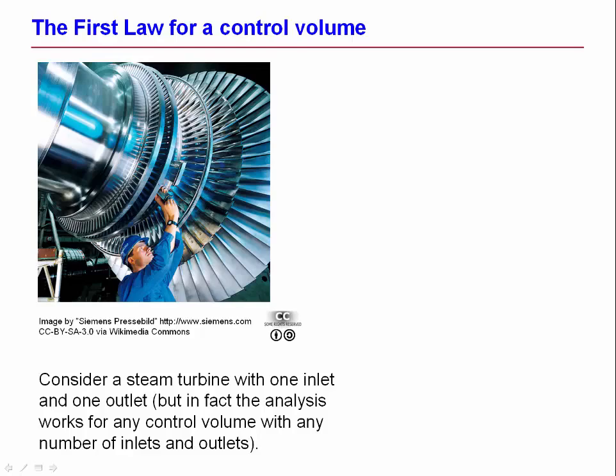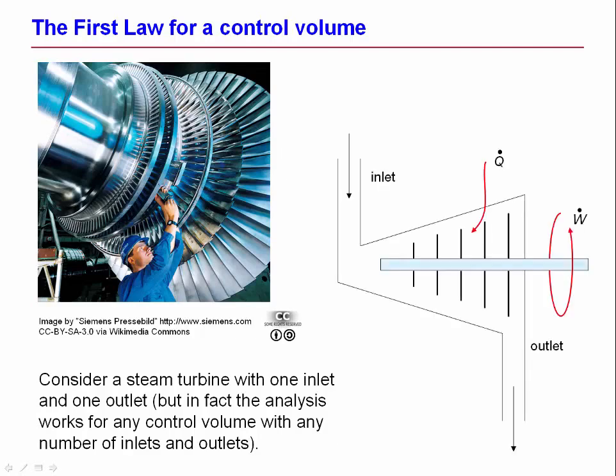The blades drive the turbine shaft which can do something useful like drive an electrical generator. So a steam turbine converts energy of the steam into shaft power. Usually the turbine rotor is inside a casing and in thermodynamics we draw a cartoon of steam turbines with an inlet on the left, an outlet on the right. We may have energy going in or out in the form of heat and we have energy coming out in the form of mechanical power.